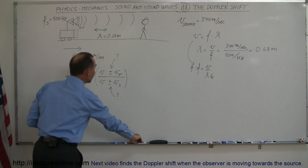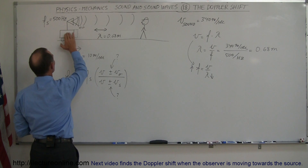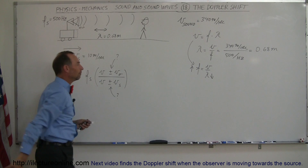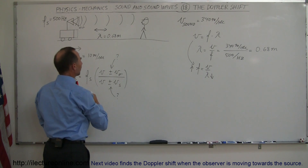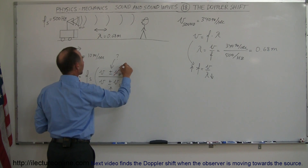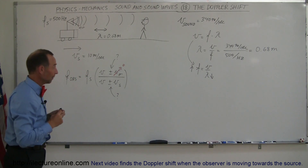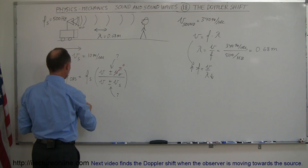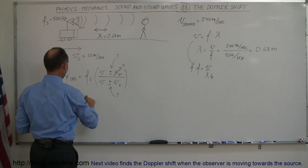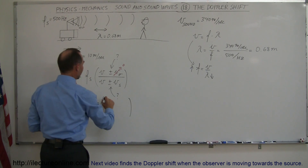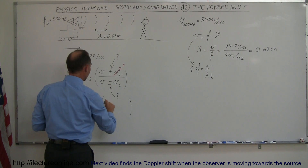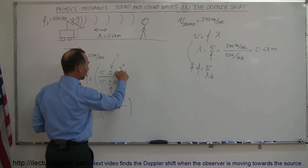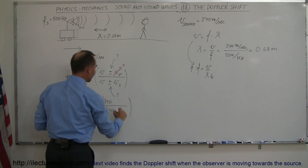In this particular case, the source is moving towards the observer at 10 m/s, and the observer is not moving at all. So the velocity of the observer is zero — that term goes away. The velocity of the source is 10 m/s. This becomes: frequency observed equals 500 Hz times 340 m/s divided by 340 plus or minus 10.